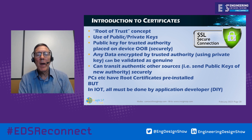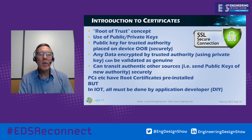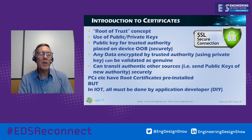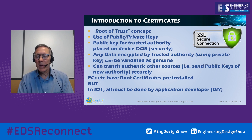Any data encrypted by a trusted authority using their private key can be validated as genuine, and you can act on it. Authentication is very often more important than encryption. When you see HTTPS, it means your computer has validated that the website you're talking to is actually what you think it is, using a system of trusted root certificates. PCs all have a load of root certificates pre-installed, but in IoT it has to be done by hand — making a Wi-Fi system with a small module involves a lot of heartache to put certificates in securely.